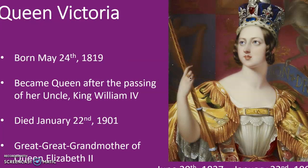His mother, the monarch, was Queen Victoria, and she is the great-great-grandmother of Queen Elizabeth II. Prior to Queen Elizabeth II, she was the longest reigning British monarch of all time, with an impressive reign from June 20th, 1837, all the way through January 22nd, 1901.